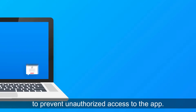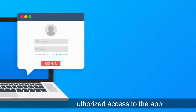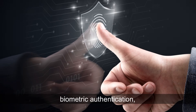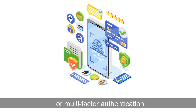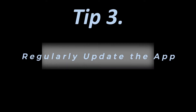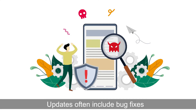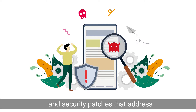Another tip is to implement user authentication to prevent unauthorized access to the app. This can include measures such as passwords, biometric authentication, or multi-factor authentication. Regularly updating the app is also important for mobile app security. Updates often include bug fixes and security patches that address vulnerabilities in the app.